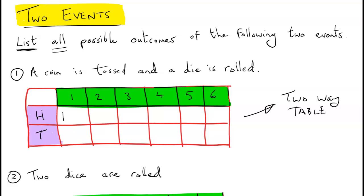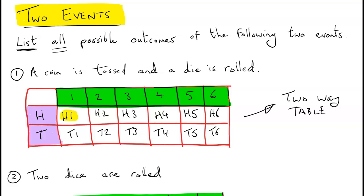So I could flip a head followed by a 1, a head and a 2, a head and a 3, and so on. Or I could flip a tail and get a 1, a tail and a 2, a tail and a 3 — these are all my outcomes. In total there are 12 possible outcomes. A quicker method: there are 2 coin outcomes and 6 dice outcomes, and 2 multiplied by 6 is 12.